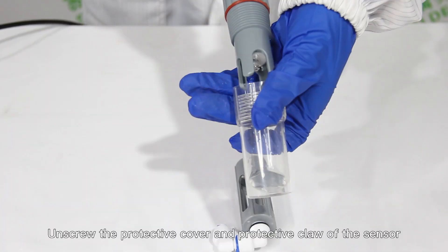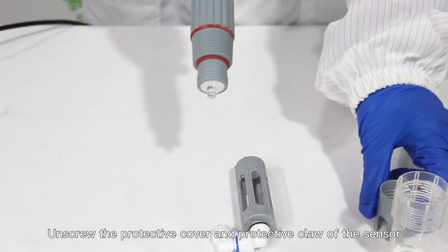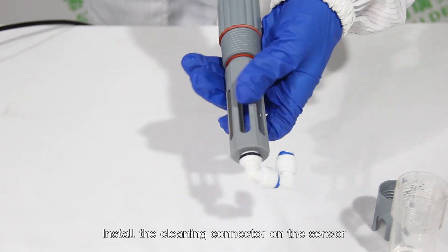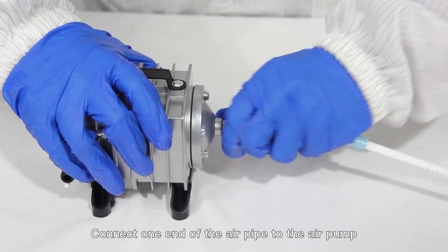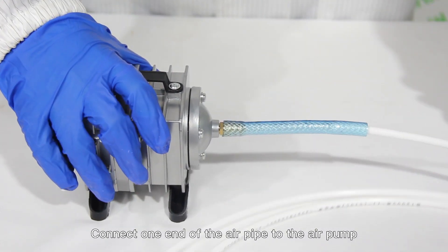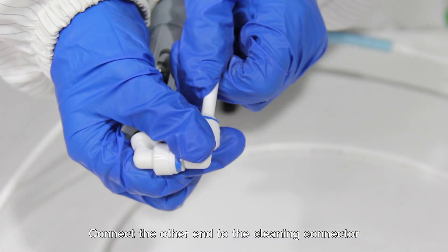Unscrew the protective cover and protective claw of the sensor. Install the cleaning connector on the sensor. Connect one end of the air pipe to the air pump. Connect the other end to the cleaning connector.